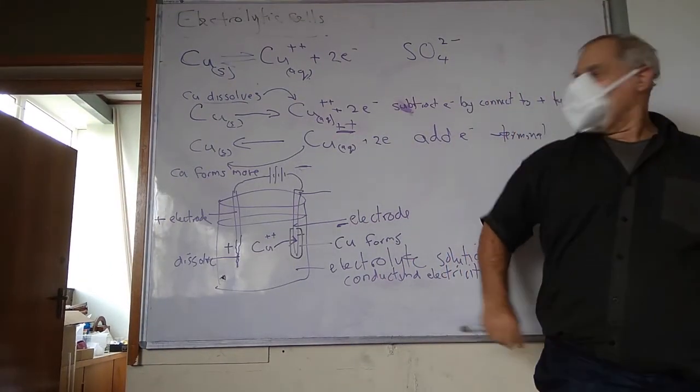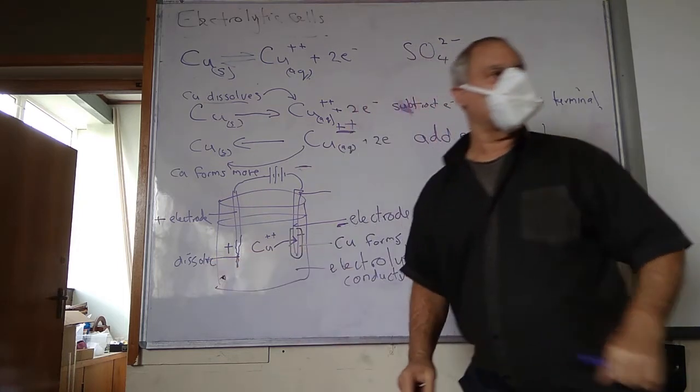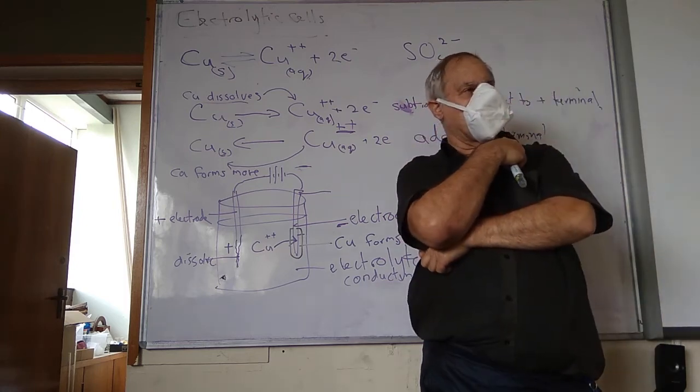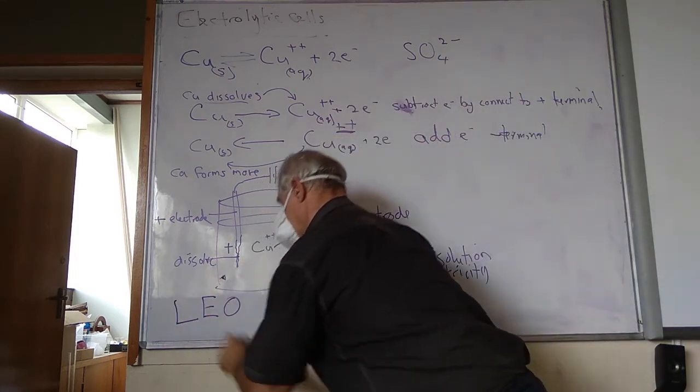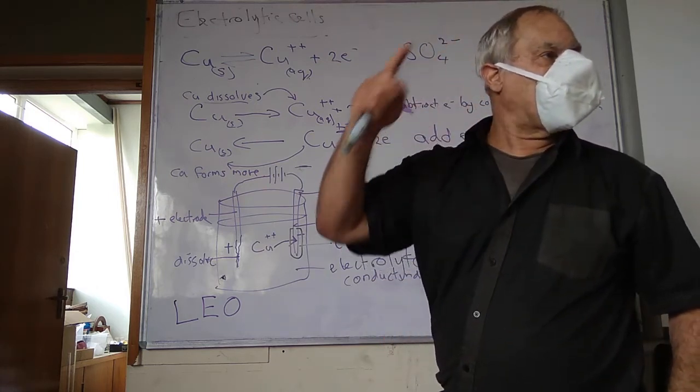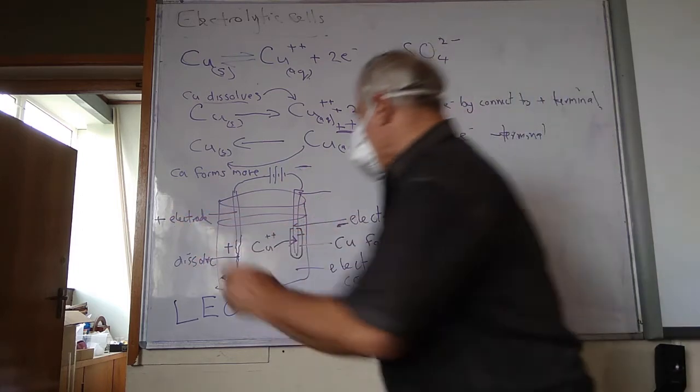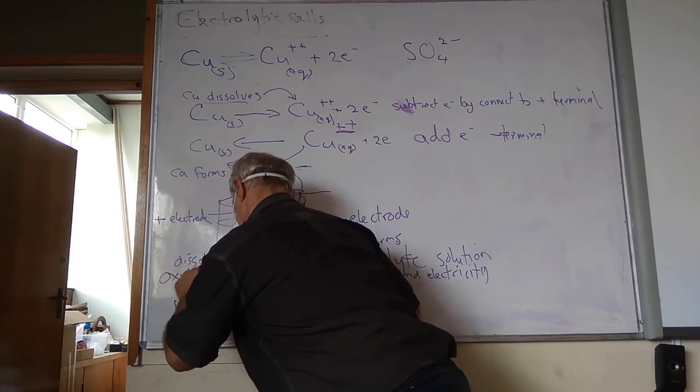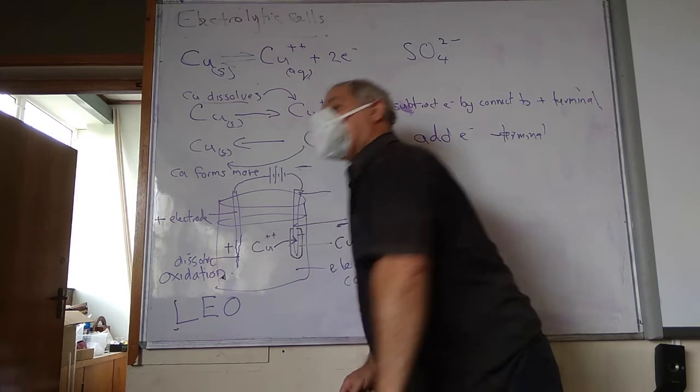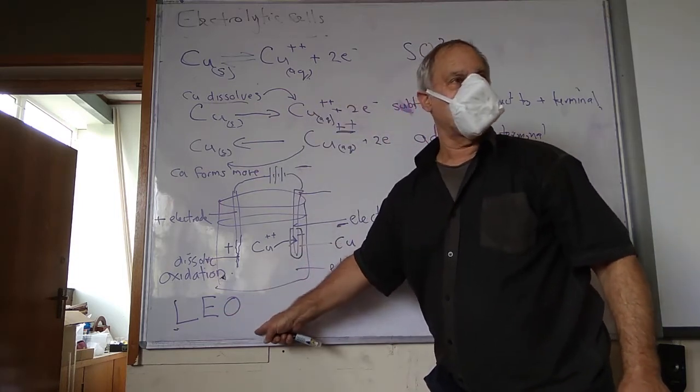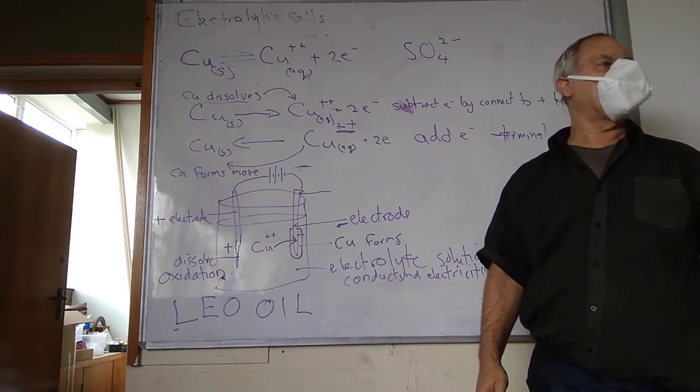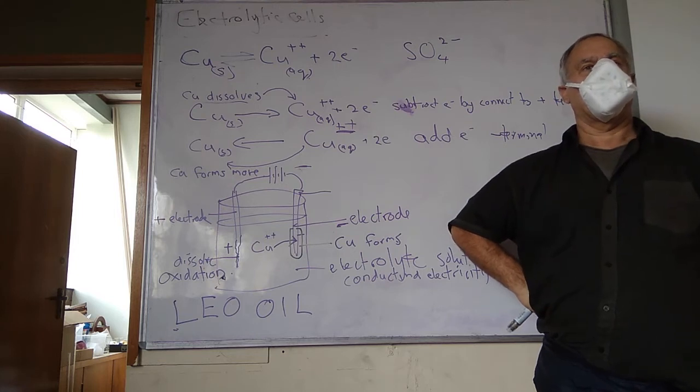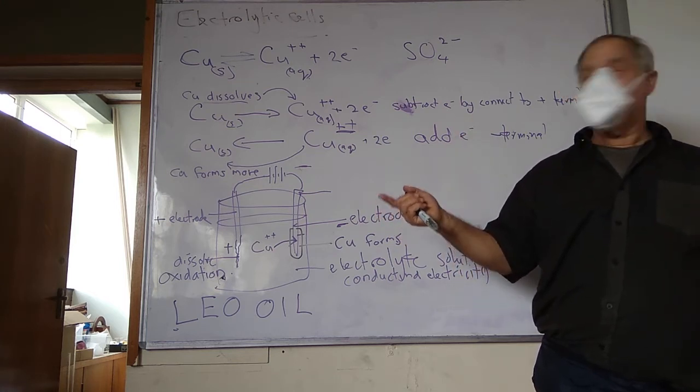Now, when something loses electrons, which it's doing here to dissolve, who knows what that process is called? The loss of electrons is called LEO. Loss of electrons is oxidation. So this is oxidation from the mnemonic: loss of electrons is oxidation, or OIL, oxidation is a loss.